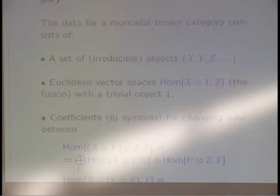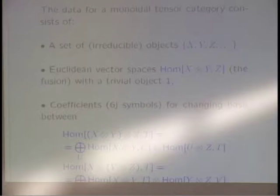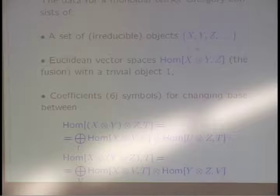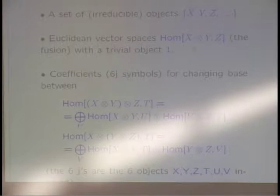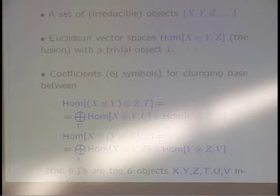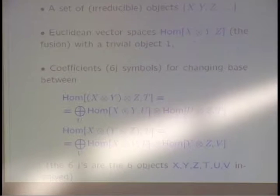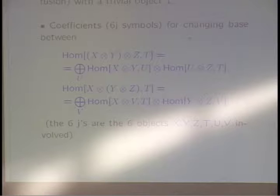So they are only modules — they can be tensored with something from outside. They are like cosets with respect to a subgroup: they can be multiplied by the subgroup, but not multiplied among themselves with a result of the same form. The method for doing this is extremely simple. If you have a monoidal tensor category, you have a set of irreducible objects, some Euclidean vector spaces — hom from X tensor Y to Z — modeling the tensoring structure of representations of a finite or compact group, without commutativity with the trivial object one. The rest of the data are some 6J symbols, coefficients for changing bases corresponding to associativity.